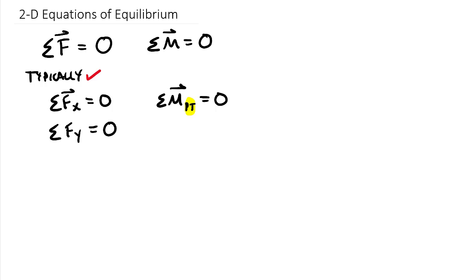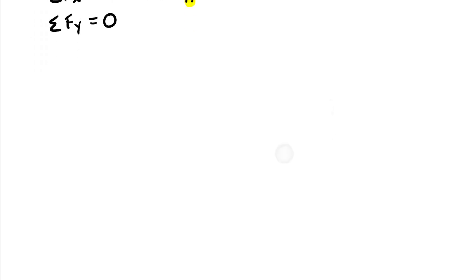These three equations will solve any problem, so it doesn't matter if you use these or other equations — you'll still get the same answers. But you can only have three equations in 2D. Fundamentally there are three degrees of freedom of motion, therefore there are three independent equations of equilibrium. If you write a fourth one correctly, you'll end up with something like three equals three — it doesn't add any additional information. So if you only have three equations, make sure you only have three unknowns on your free body diagram.